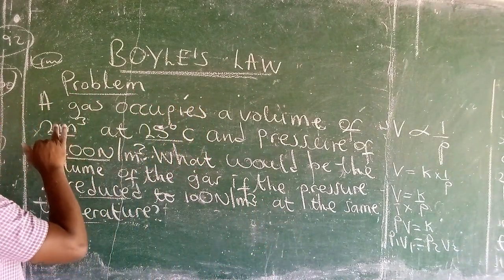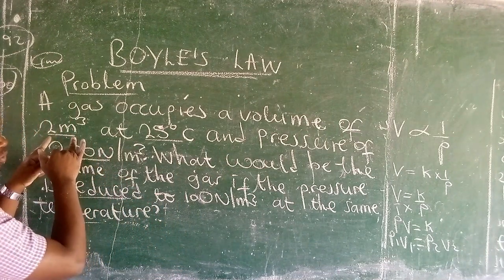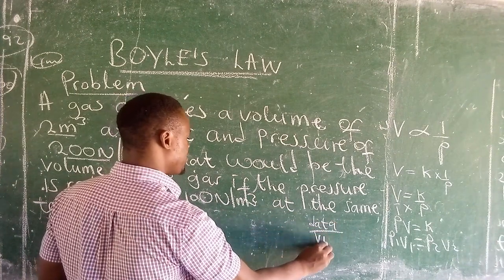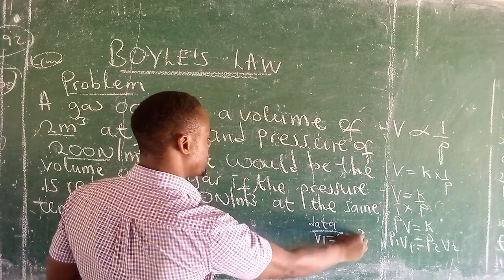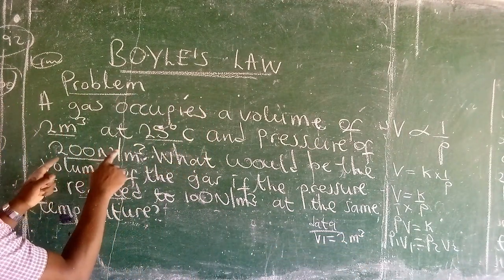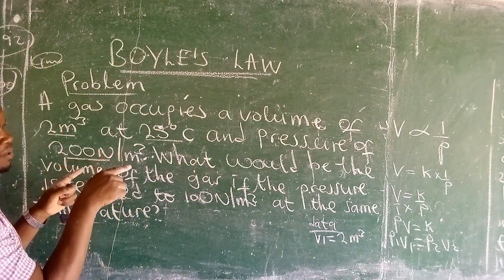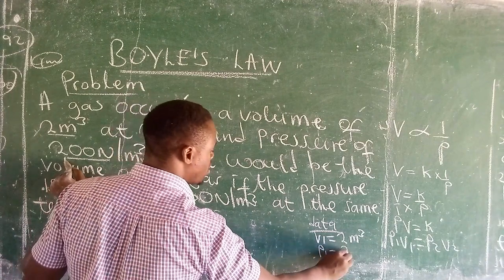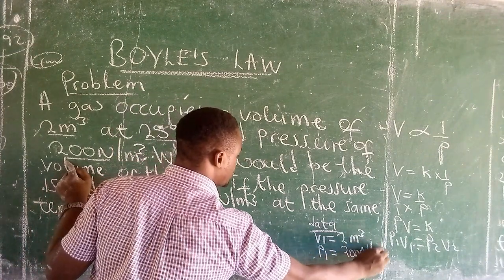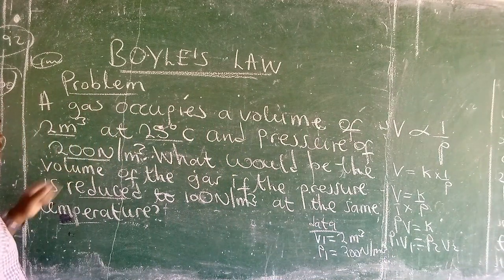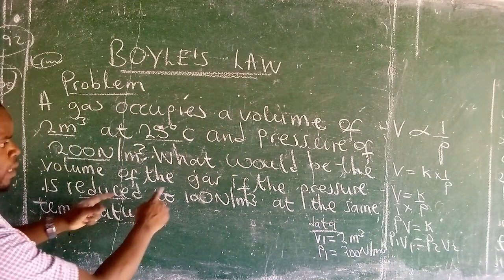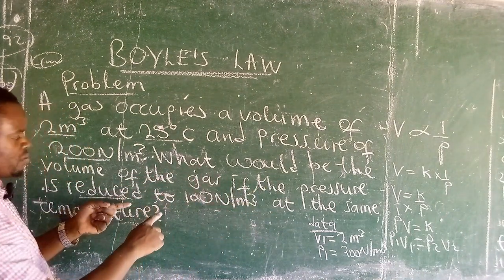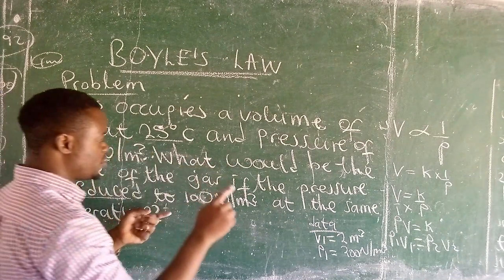The problem is: a gas occupies a volume of two cubic meters. What we are given is volume one, which is two cubic meters, at a temperature of 25 degrees Celsius and pressure p1 equal to 200 newton per cubic meter. The question is: what would be the volume of the gas if the pressure is reduced to 100 newton per cubic meter?